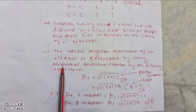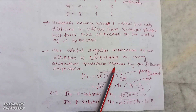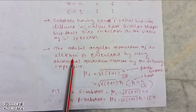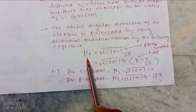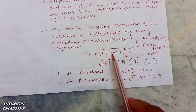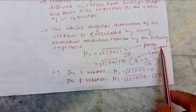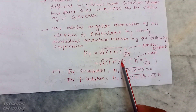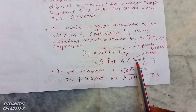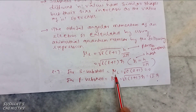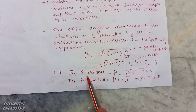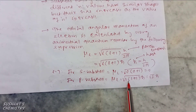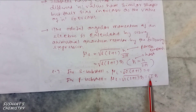The orbital angular momentum of an electron is calculated using the azimuthal quantum number by the following expression: mu_L equals the square root of l(l+1) times h-bar, where h-bar equals h by 2 pi. This quantum number is very useful for calculating orbital angular momentum. For the s sub-cell, l=0, so mu_L equals zero. For the p sub-cell, mu_L equals the square root of 1(1+1) times h-bar, which equals root 2 times h-bar.